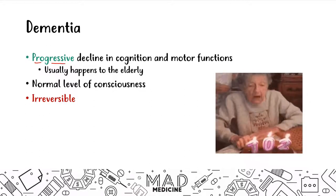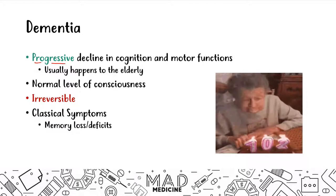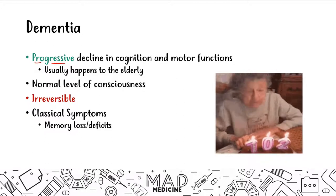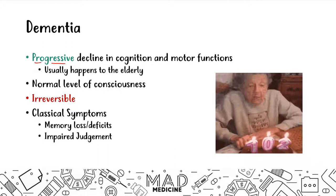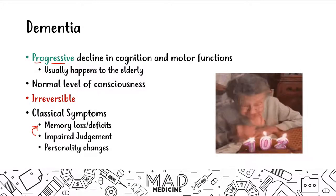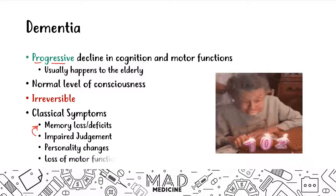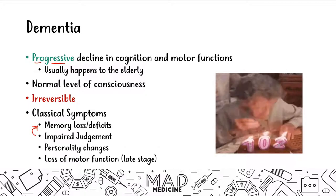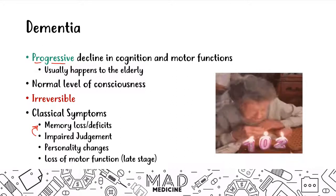When it comes to the classic symptoms, the first thing is memory loss and deficits. Dementia patients forget who their relatives are, who they're married to, and eventually they forget who they are and how to perform bodily functions. Patients also have impaired judgment, personality changes — a very common manifestation — and in the late stages, loss of motor function. A helpful way to think of it: first you forget the people around you, then who you are, then how to perform day-to-day bodily functions, and eventually the body forgets how to survive.